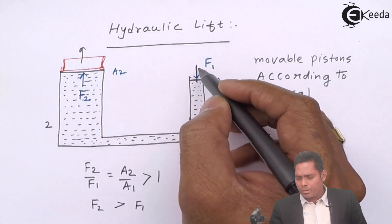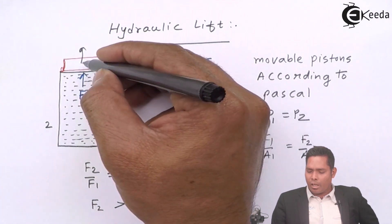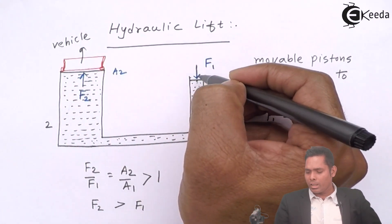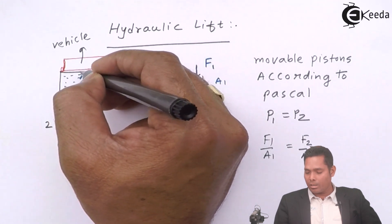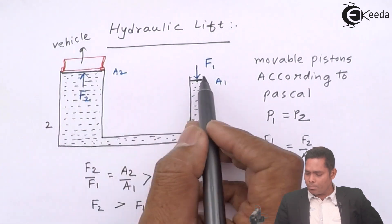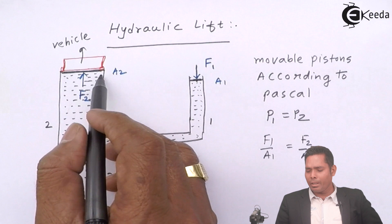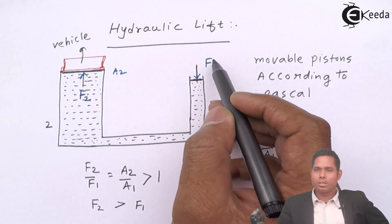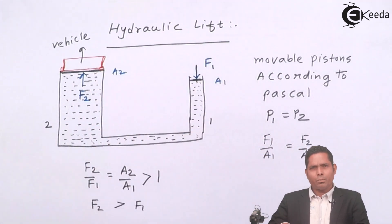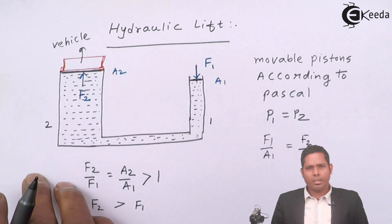So here the force is multiplied: by applying a little force, a very large force is developed, which is capable of lifting heavy mass like a vehicle. That force is increased here many times depending on the ratio of the two areas. If this area is 10 times that area, the force will also be 10 times. Depending on the mass to be lifted, the area ratio is chosen, and whatever force we apply here is multiplied and used to lift the vehicle. That is the use of hydraulic lift.